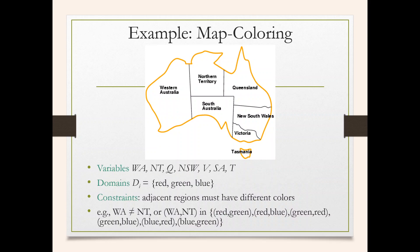Let's define how to solve this problem. The variables are the names of the regions: WA (Western Australia), NT (Northern Territory), Q (Queensland), NSW (New South Wales), V (Victoria), SA (South Australia), and T (Tasmania). The domain is the set of colors available — three colors: red, green, and blue (RGB). The constraint is that adjacent regions must have different colors.